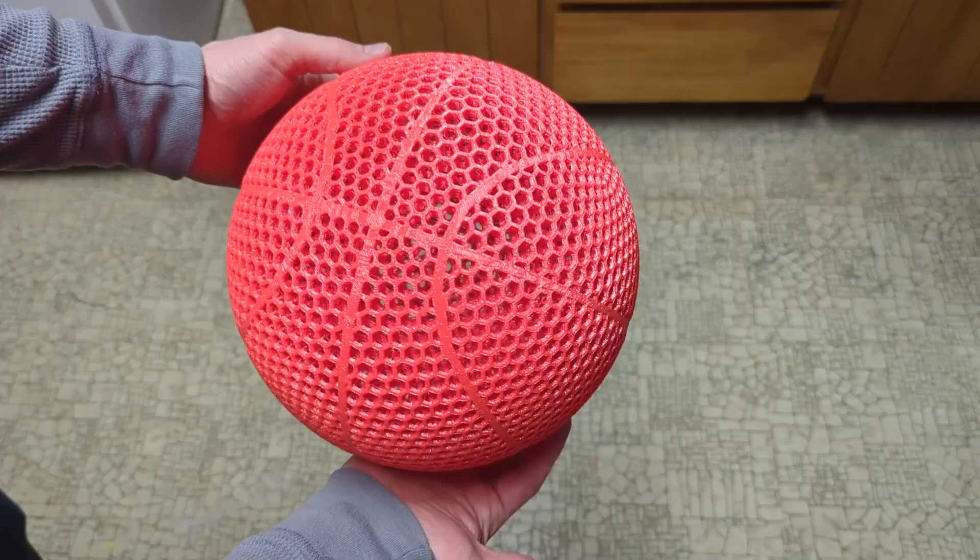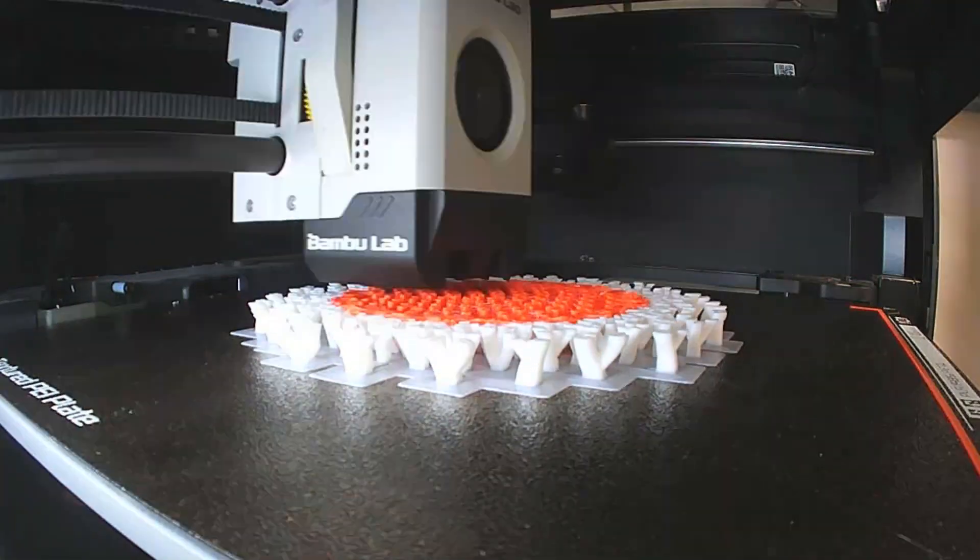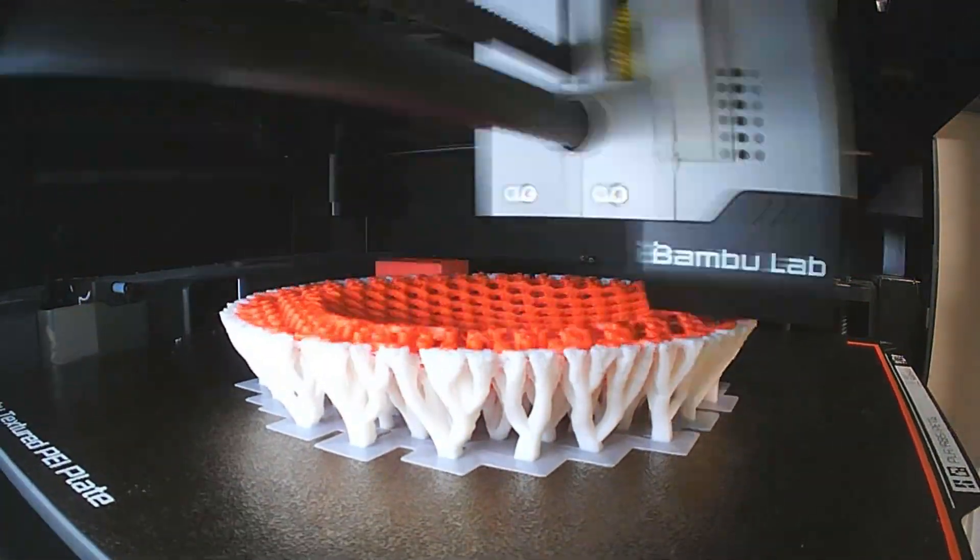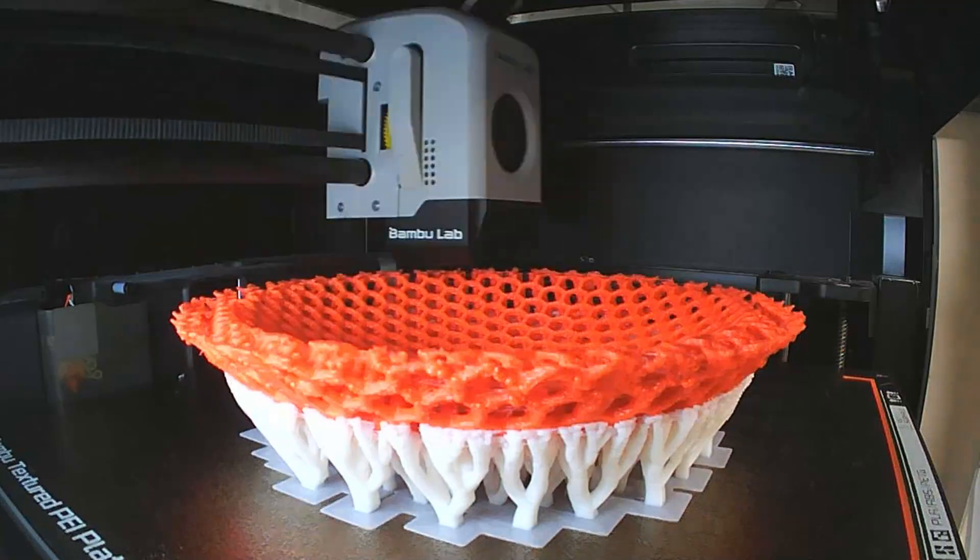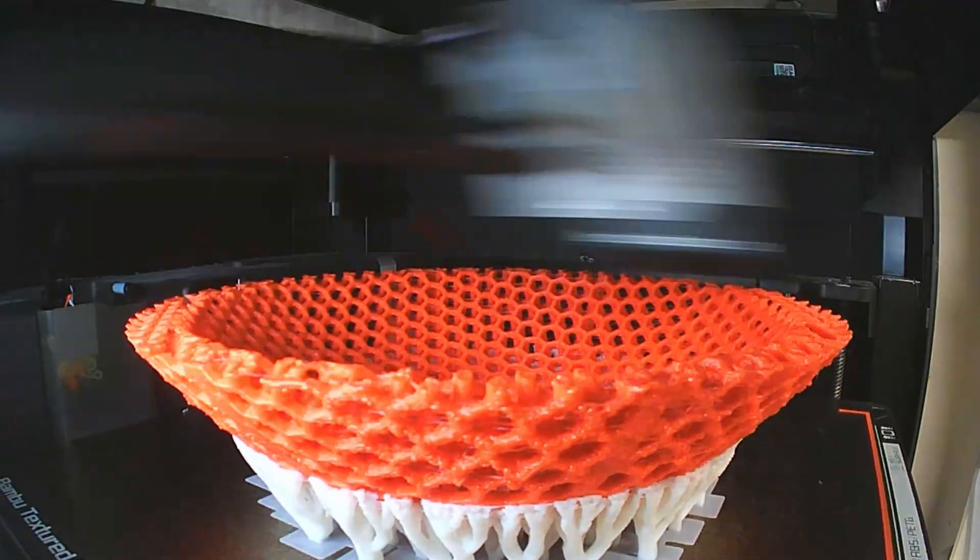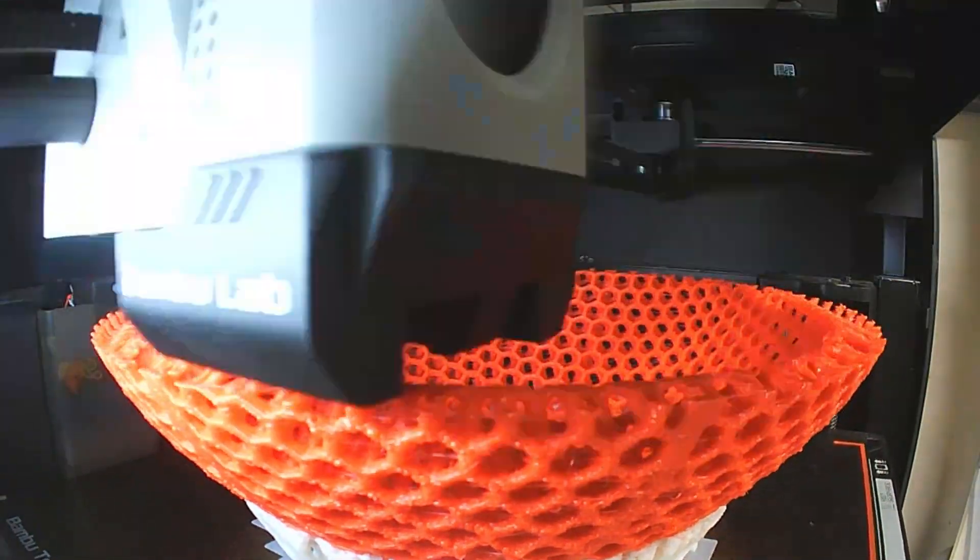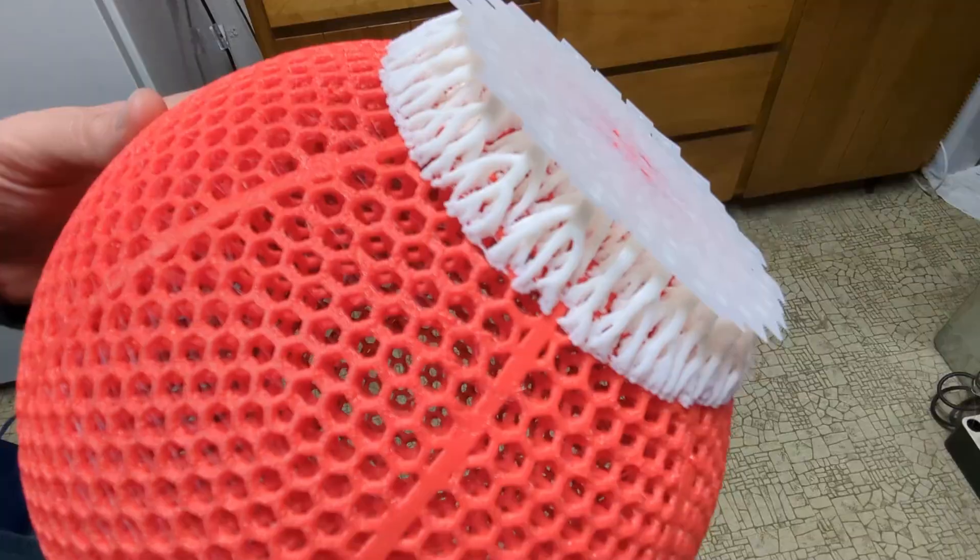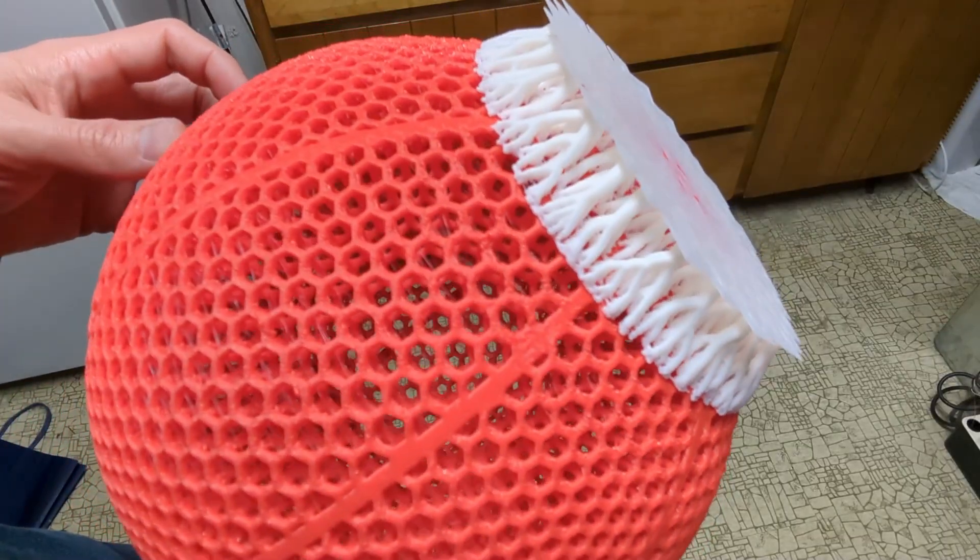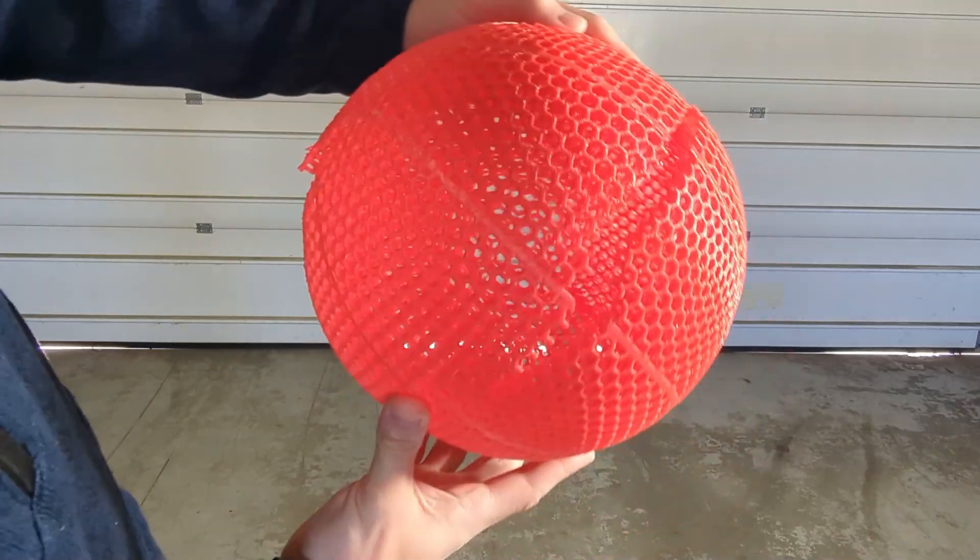It looks like this new TPU from Bamboo Lab does actually work with the AMS, which is actually spectacular. Because this opens a lot of opportunities for people with Bamboo Lab printers who want to try different things with multiple materials, say different supports or just combining two different materials together. But for question number two, I think it's pretty safe to say that this is not the greatest filament to make airless basketballs with.